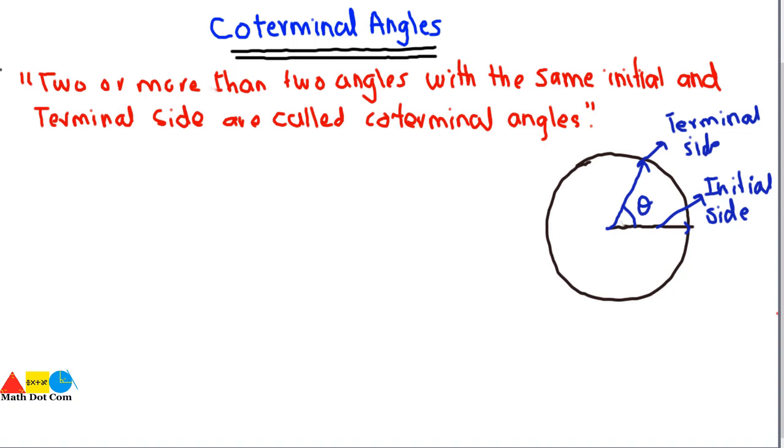But what about the coterminal angles? Coterminal angles basically refer to the terminal side. If I say this is O, this is A, and this is B, and you will be asked to find whether the two angles are coterminal or not, what do you have to do? Let's start with an example.